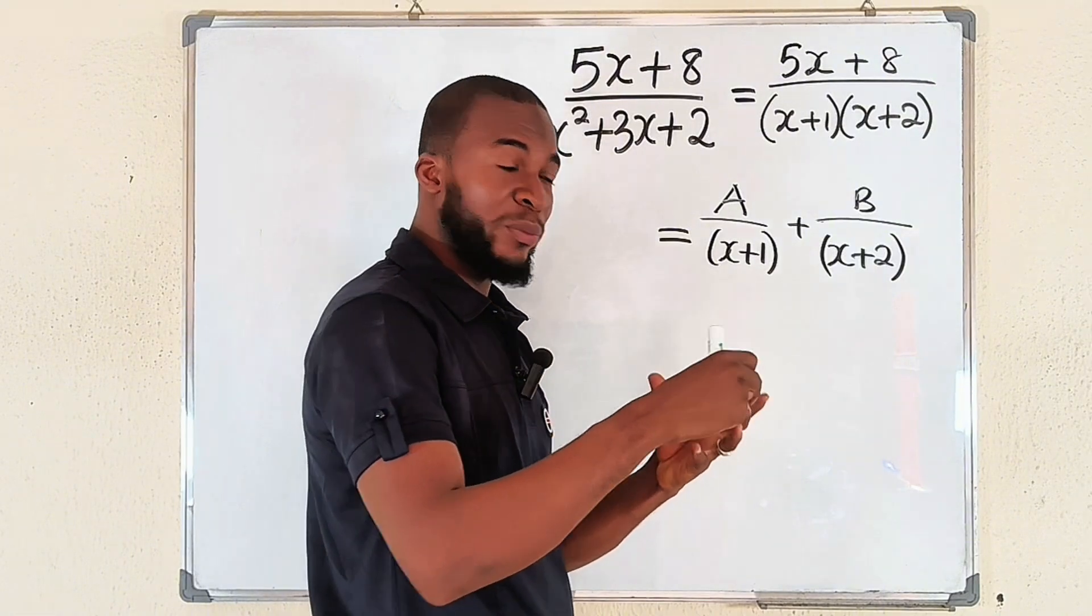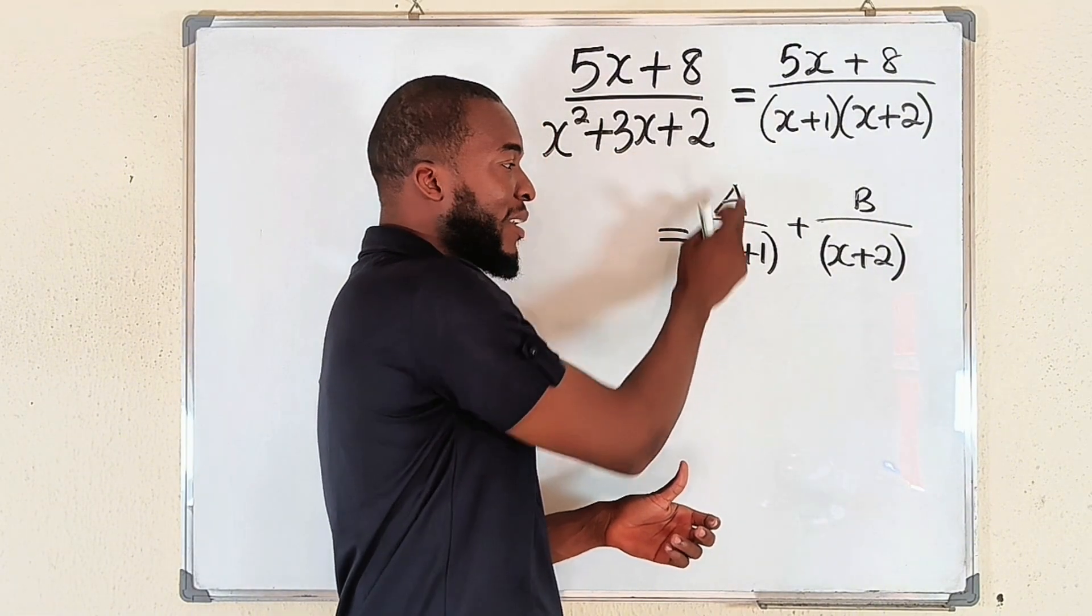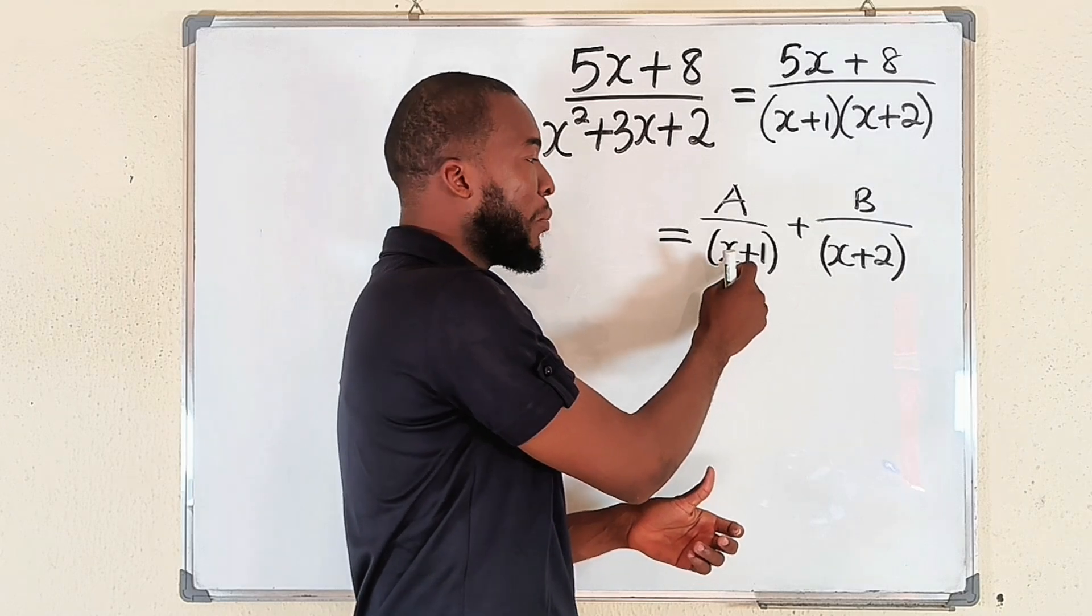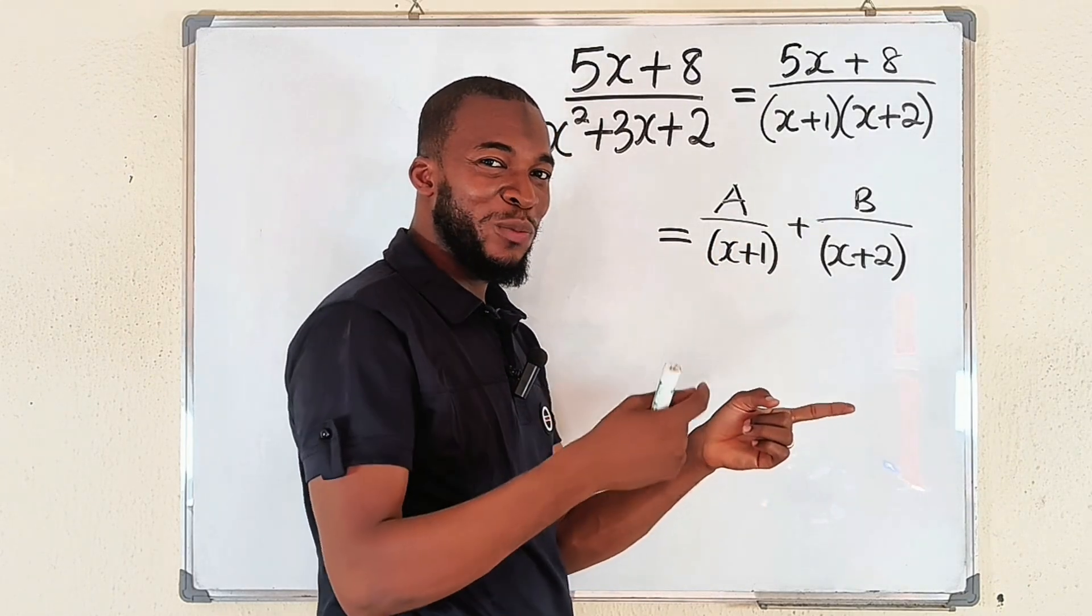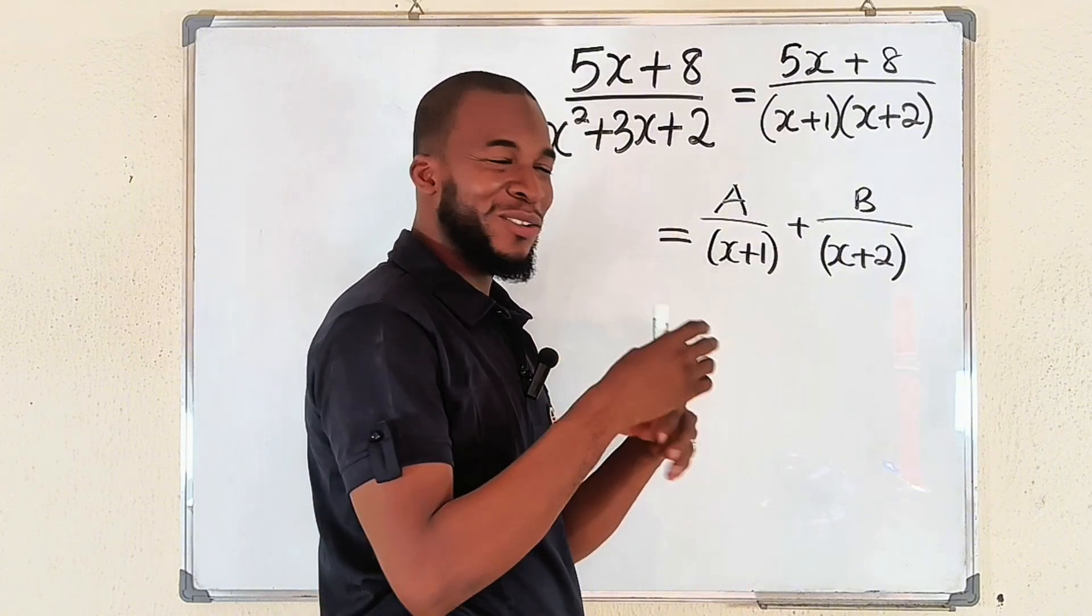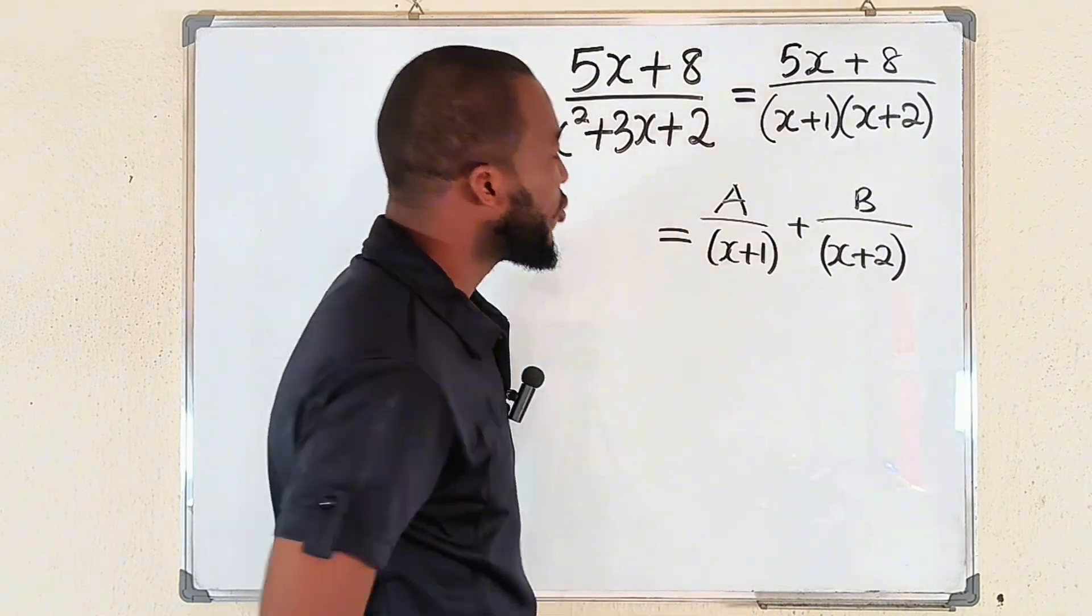Linear has degree one. One degree less will be zero, and anything to the power of zero will be a constant. All right, so now let us apply the cover-up method. I would like to find the value of A.